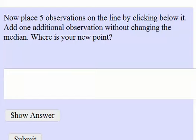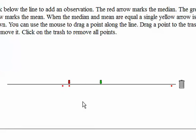The second question asks, now place five observations on the line by clicking below it. Add one additional observation without changing the median. So we've got three points here. I'll move this one a little closer. We're asked to put five points here.